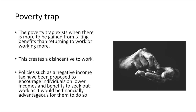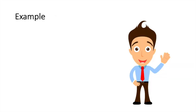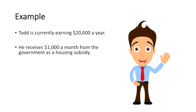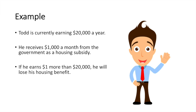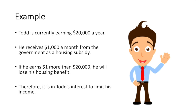Let's look at an example to help us understand this better. Todd is currently earning $20,000 a year. He receives $1,000 a month from the government as a housing subsidy. If he earns $1 more than $20,000, he will lose his housing benefit. Therefore, it is in Todd's interest to limit his income.